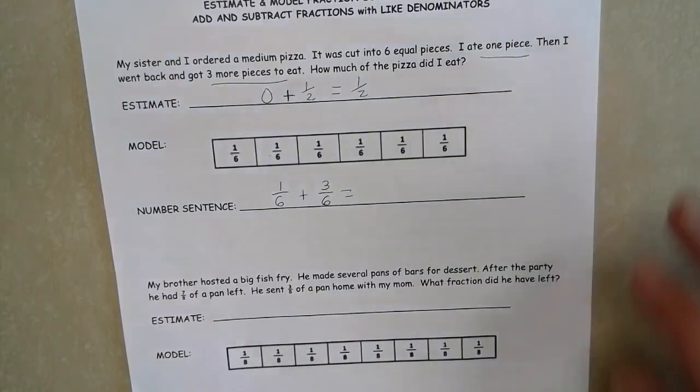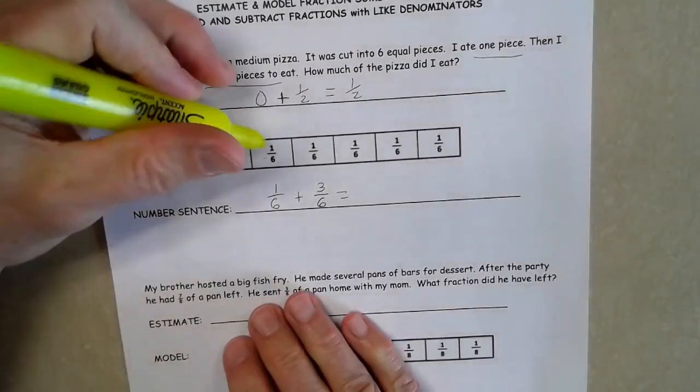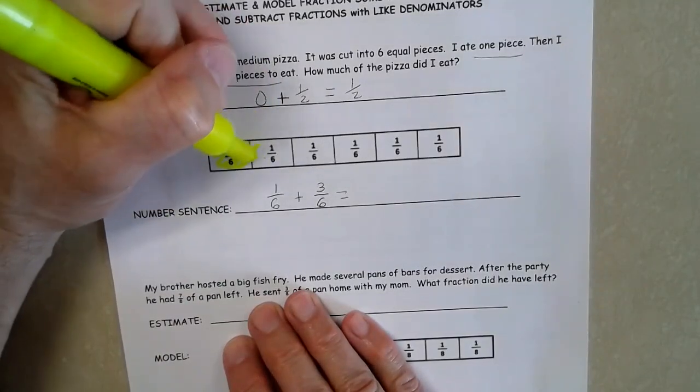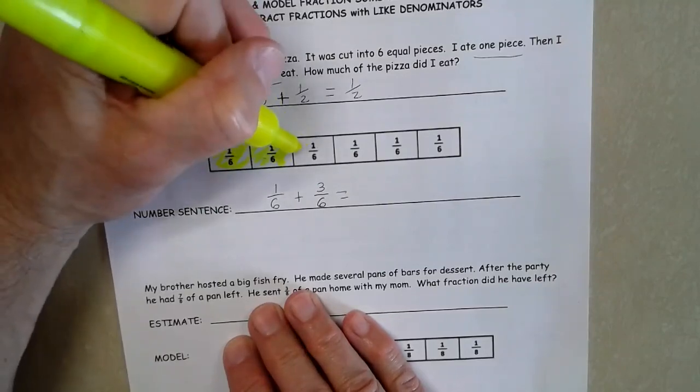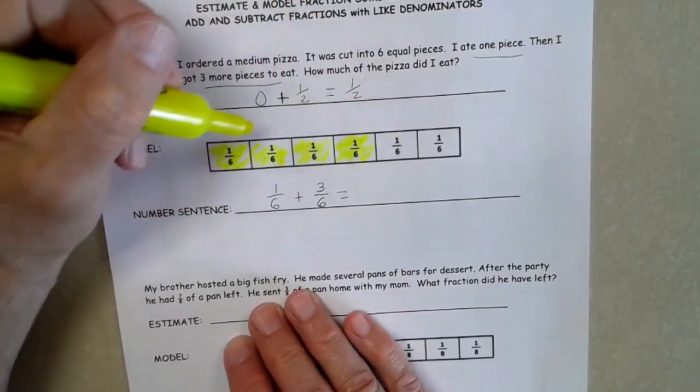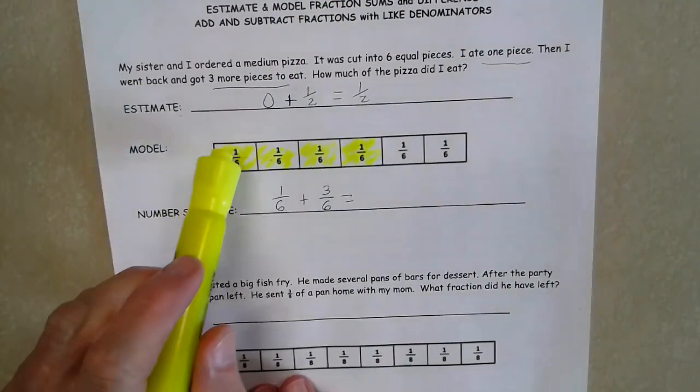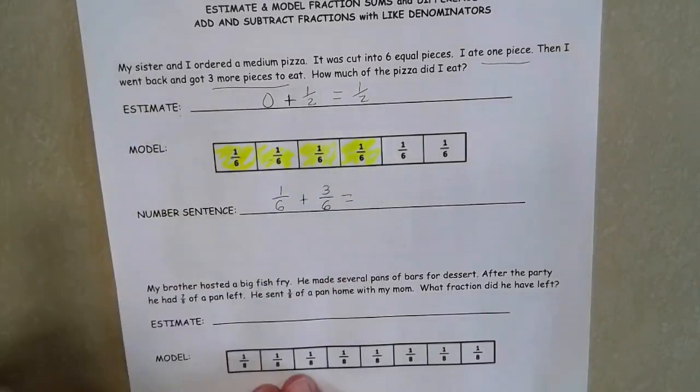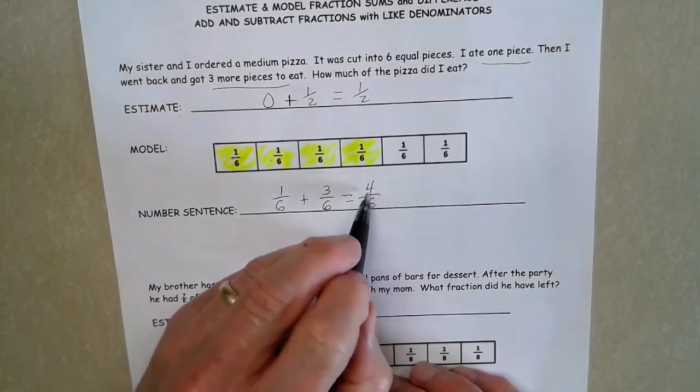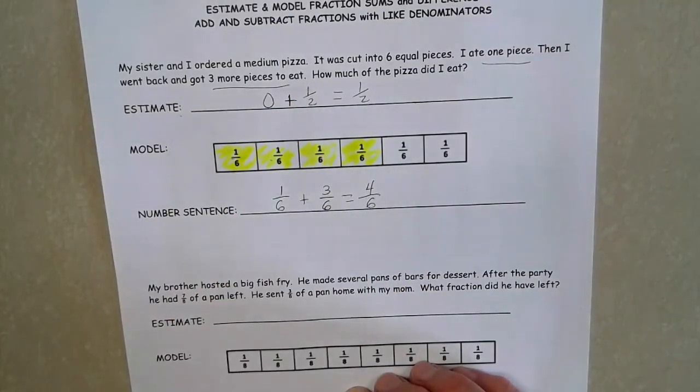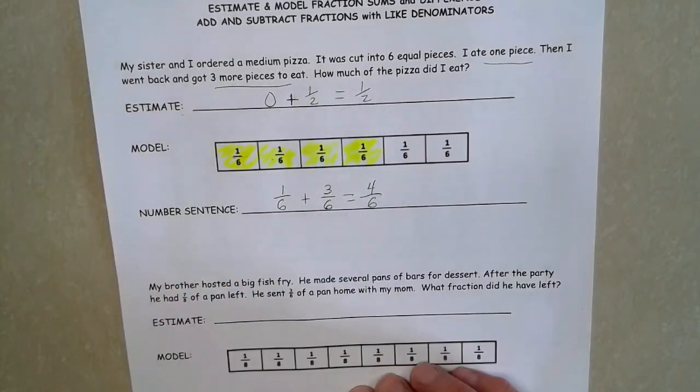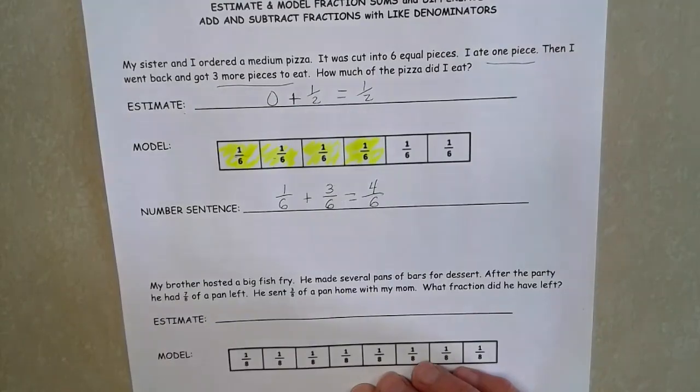If I look at this from a model perspective, I ate one sixth and then those additional one, two, three sixths. So my total that I have is one, two, three, four sixths, or I know that three plus one will give me four or four sixths. So I ate four sixths of the pizza, which is a little over half and my estimate was a half. So we're in the right ballpark there.